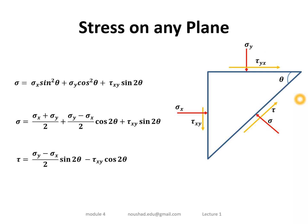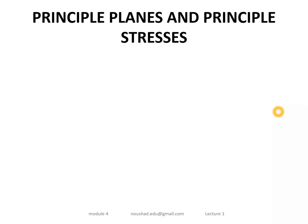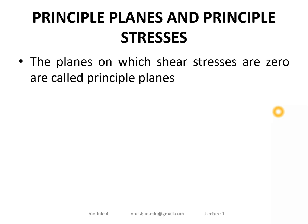We have the stress on any inclined plane, with both normal and shear stress components. A plane on which the shear stress is equal to zero is called a principal plane. The stress acting on a principal plane is purely normal stress with no shear component.